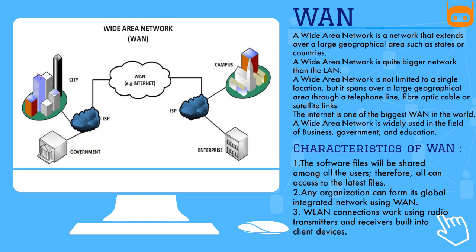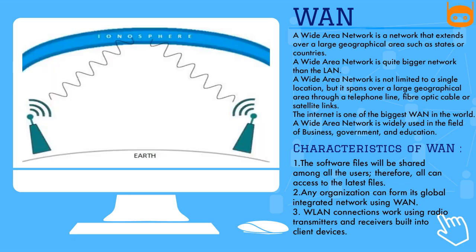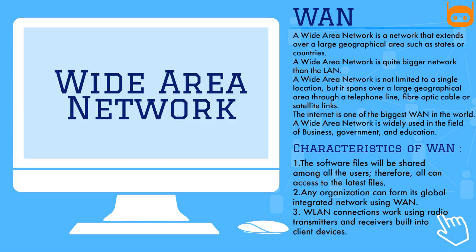Characteristics of WAN: software files are shared among all users so everyone can access the latest files. Any organization can form its global integrated network using WAN. WLAN connections work using radio transmitters and receivers built into client devices.